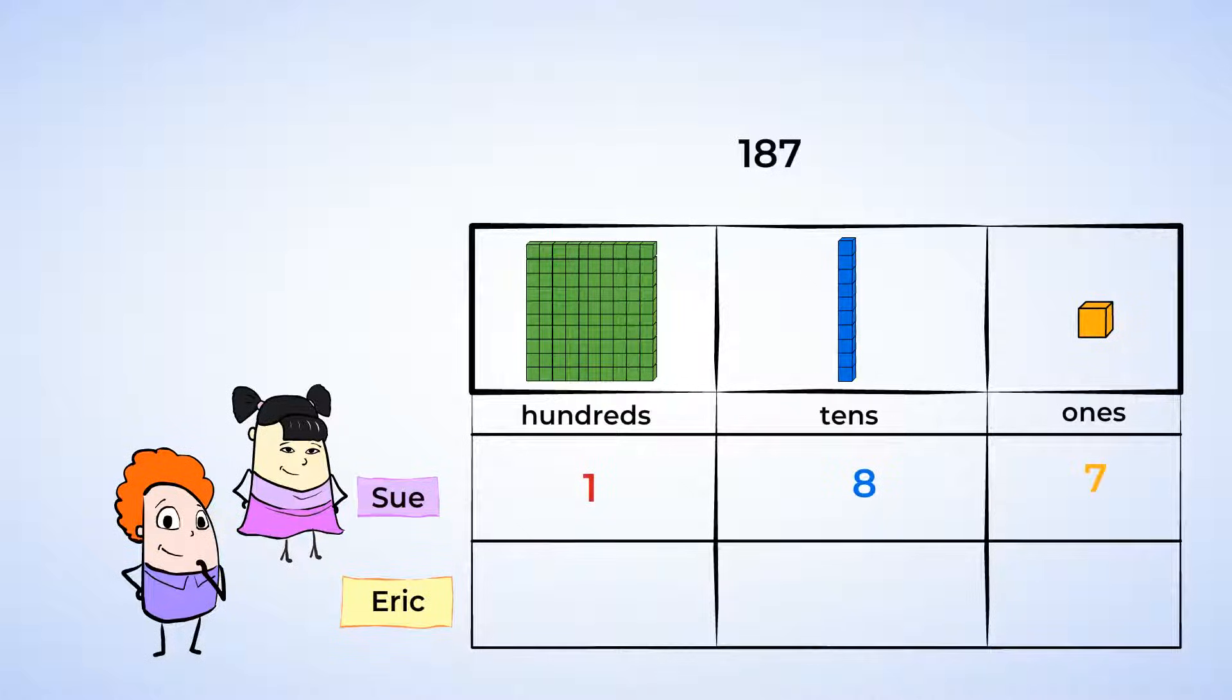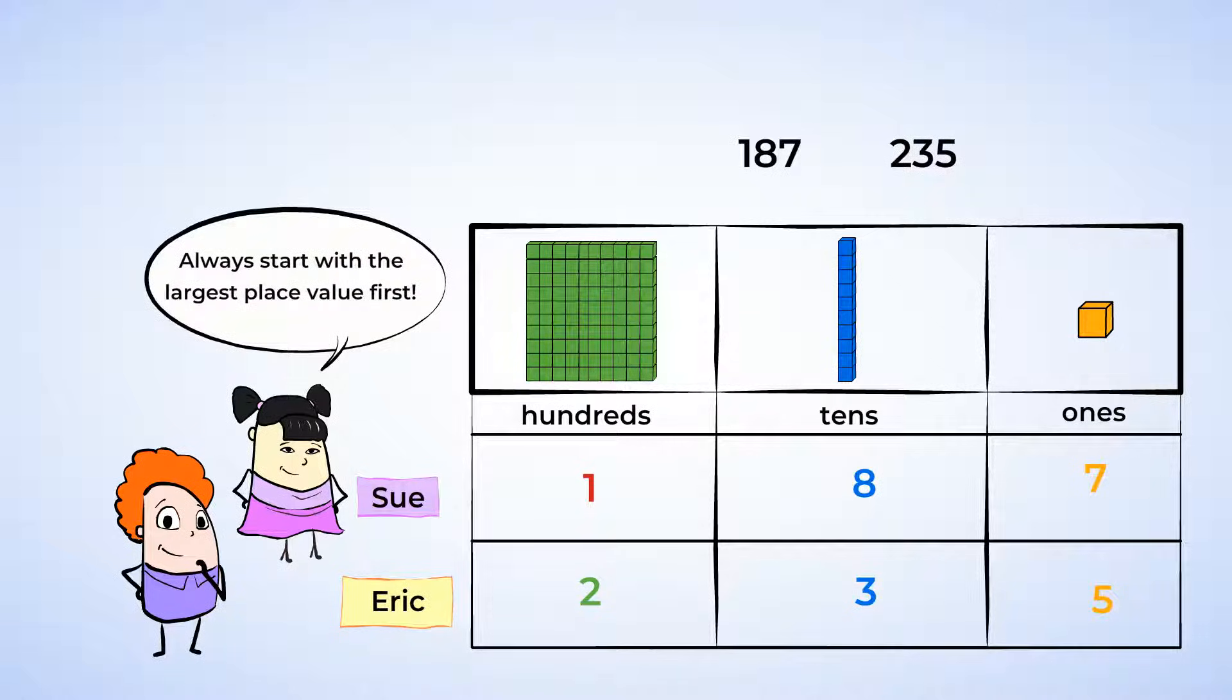Eric scored 235. This means there's a 2 in the hundreds place, a 3 in the tens place, and a 5 in the ones place. When you're comparing numbers, always start with the largest place value first.